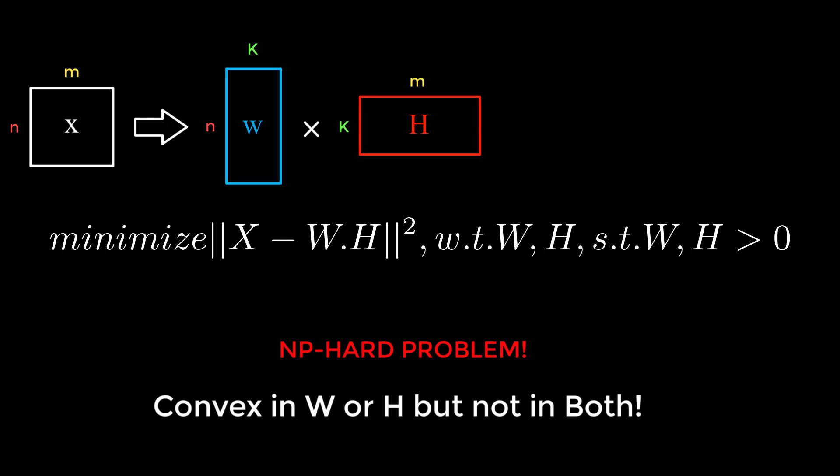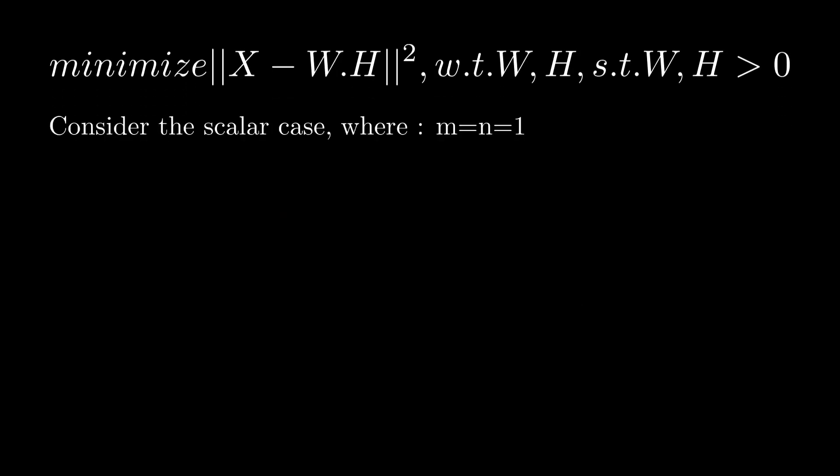But this problem is an NP-hard problem because it is convex in W or H, but not in both. If you ask why, here is the proof. Consider the scalar case where m and n equal 1.